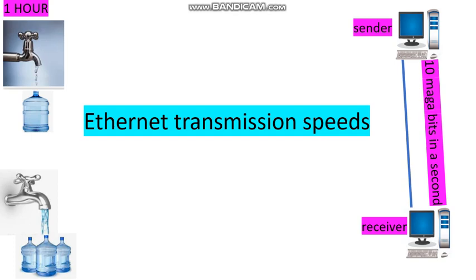Ethernet transmission speeds are constantly increasing. I will explain what transmission speed is with the help of an example. There are two taps on the screen. The first tap can fill one water can in an hour and the second tap can fill three water cans in an hour. That is, the speed of the first tap is one water can per hour and the speed of the second tap is three water cans per hour. In a similar way, there are two stations on the screen.